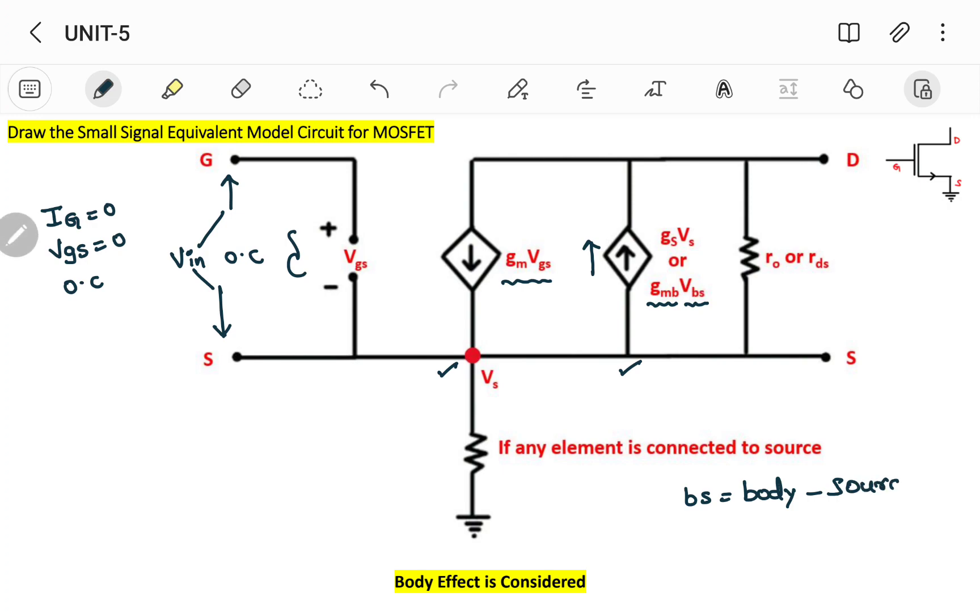Generally we write it as VSB or else VBS. B means body or bulk, S means source. So you can write it as gmb times VBS, if not you can write it as gmb times VSB. Everything is fine, only this particular parameter should be added if body effect is considered into the picture. And I've already told you that R0 or RDS should be taken into the picture if channel length modulation is taken, and if there are any extra components that are connected to the source, then only we have to write this particular element.